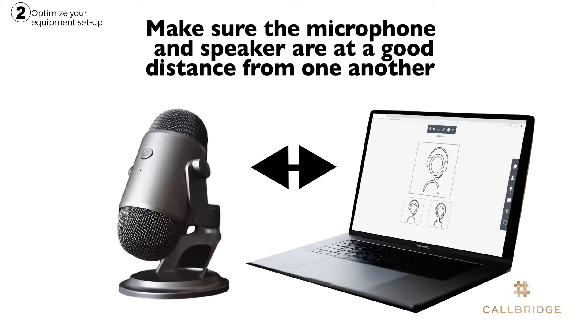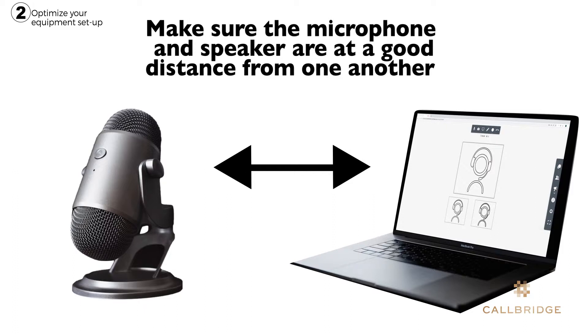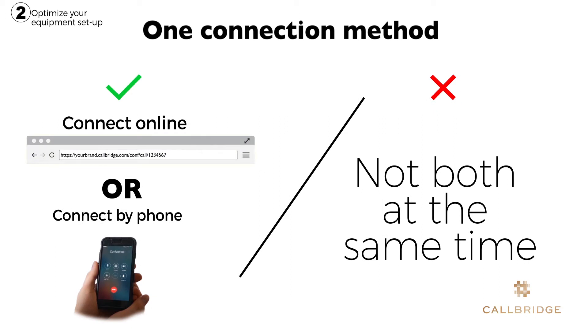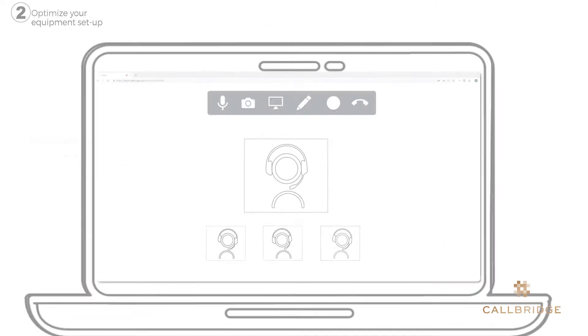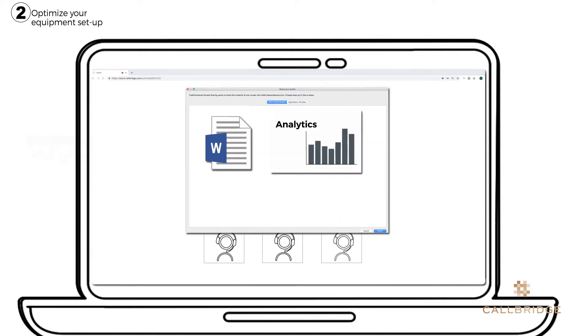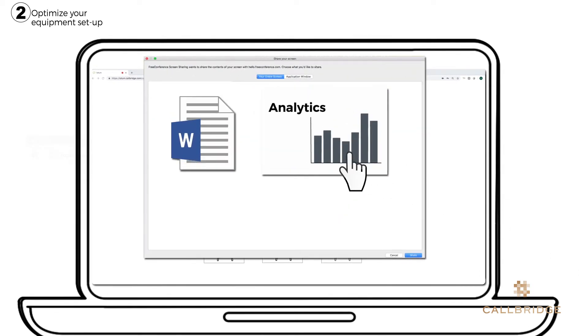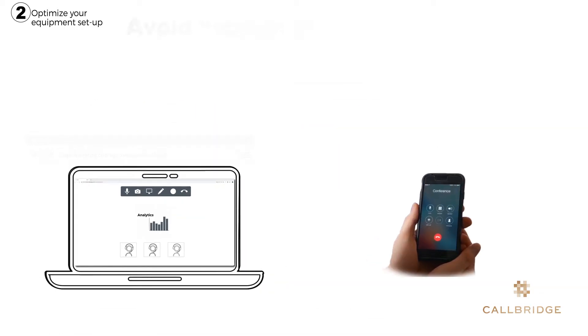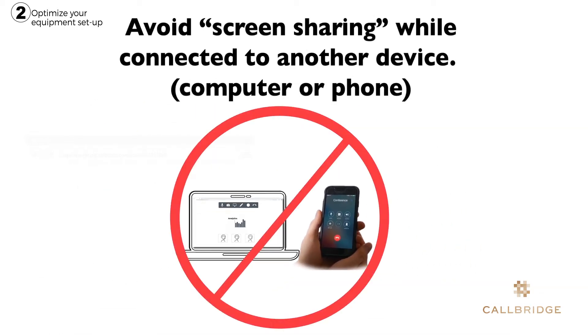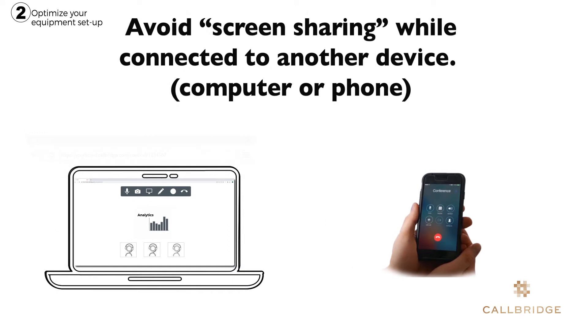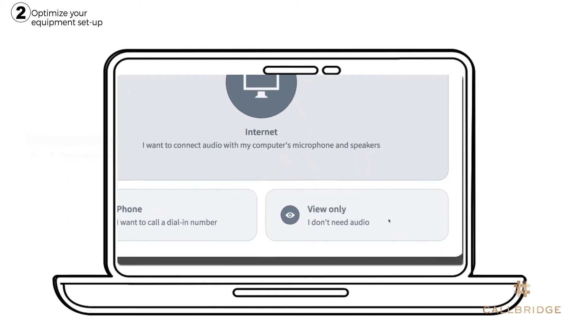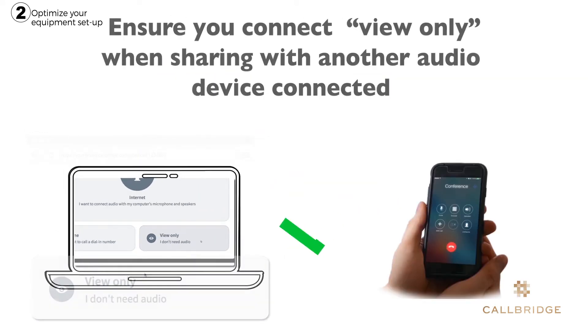The second suggestion is to optimize your equipment setup. Where you can't use a headset, make sure the microphone and speaker are at a good distance from each other to avoid any potential feedback. Make sure your audio is only connected via one method. If you would like to share your screen or view a shared screen on your computer, ensure that you select view only. If you connect your audio here and call via phone, this can cause a lot of problems, so make sure your audio is only connected by one method.